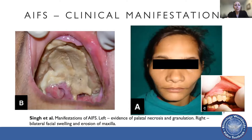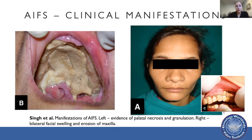Here are some examples of clinical manifestations of AIFS that may be seen on initial presentation. On the left in panel B, you can see evidence of pallor and necrosis, and on the right you can see bilateral facial swelling and erosions of the maxilla. These tend to be late findings of AIFS. Usually the earlier findings are more subtle and are often confused with routine bacterial sinusitis. When you see late complications such as pallor and necrosis or orbital complications, progression is usually quite far along.